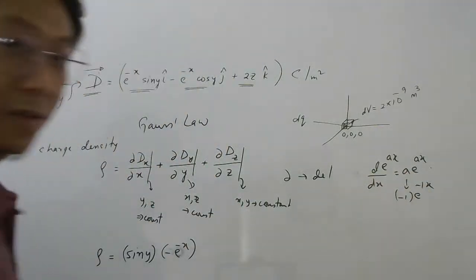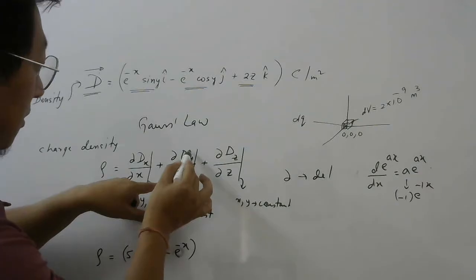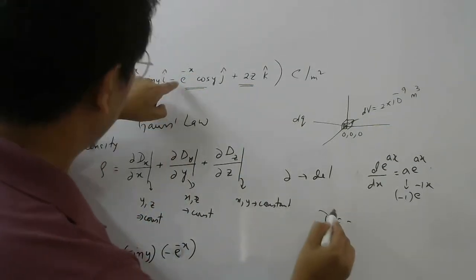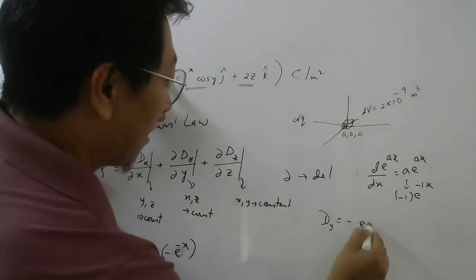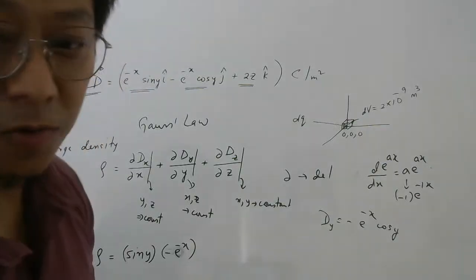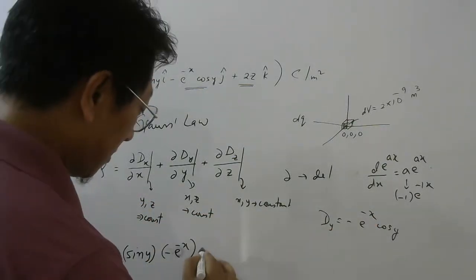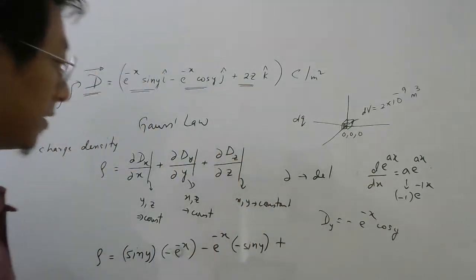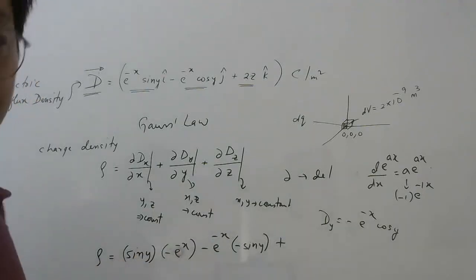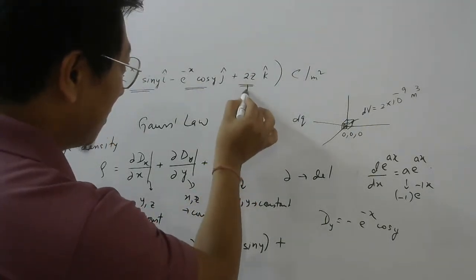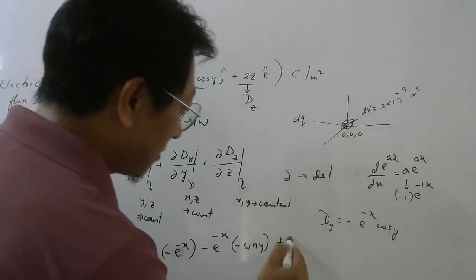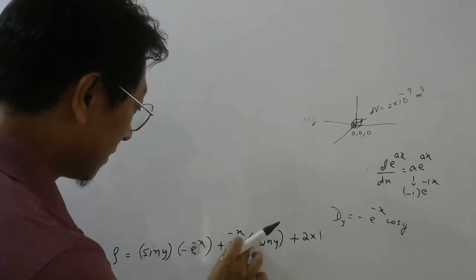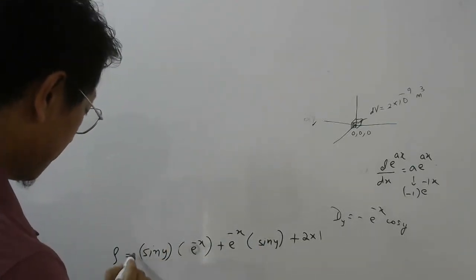That gives −e^(−x). Now take the derivative of Dy with respect to y. Dy is −e^(−x) cos y — remember to include that minus sign. Since x is constant, e^(−x) comes outside, and the derivative of cos y is −sin y. Then take the derivative of Dz = 2z with respect to z: 2 comes outside and the derivative of z with respect to z is 1. So we get −(−e^(−x) sin y) + 2, and the two minus signs make a plus.